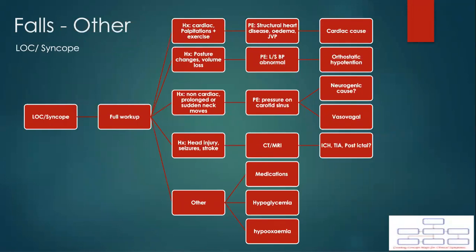Non-mechanical falls could be divided into multiple categories. Is it associated with loss of consciousness or syncope? If so, a full workup is needed, as it can be due to various conditions — some of which are benign, but some of which are dangerous. Upon taking history, make sure to ask general as well as focused questions directly related to your differential diagnosis. If you are suspecting a cardiac condition, ask about cardiac symptoms, cardiac history within the family, examine for any structural changes, raised JVP, edema, or heart murmurs.